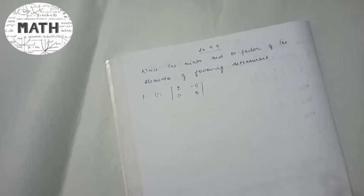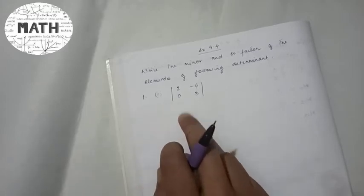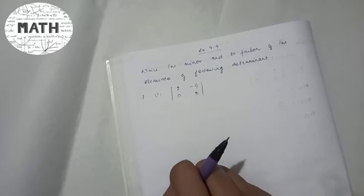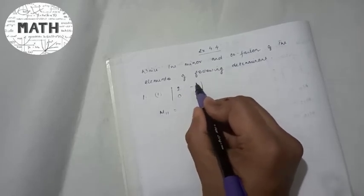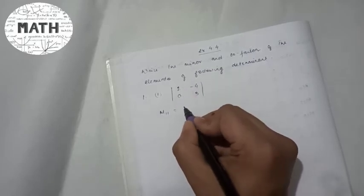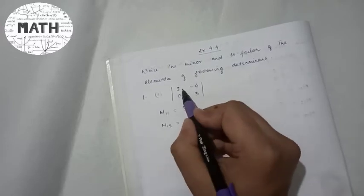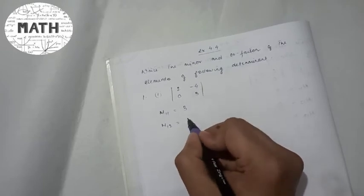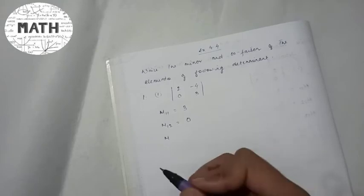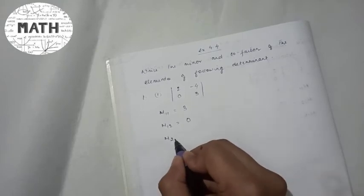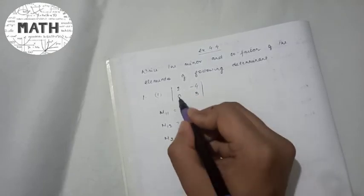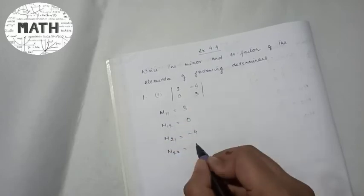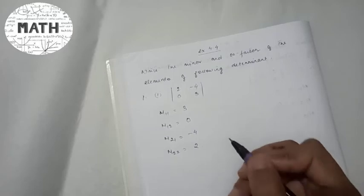Let us do questions from Exercise 4.4. Question 1: write the minor and cofactor of elements of the determinant with entries 2, minus 4, 0, 3. Finding minors first: M₁₁ — first row and first column gone — answer is 3. M₁₂ — first row second column gone — answer is 0. There is no third row since it is a 2x2 matrix. M₂₁ — second row first column gone — answer is minus 4. M₂₂ — second row second column gone — answer is 2.